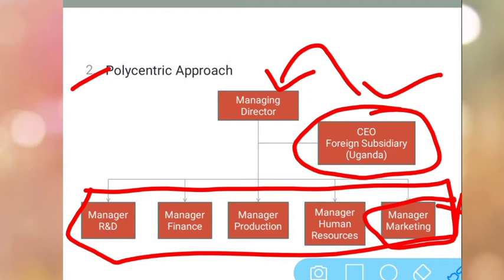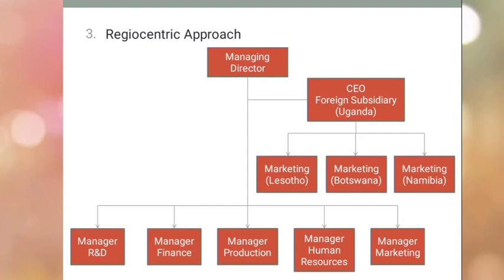In the polycentric approach, the company appoints a Chief Executive Officer for the foreign subsidiary branch. The CEO of the foreign subsidiary directly reports to the managing director at the home country head office. The CEO independently takes all decisions regarding marketing activities, production, product design, marketing strategies, and appointment of human resources, based on the requirements and preferences of the local people in the foreign market. The strategies in the foreign market are altogether different from those in the domestic market. The polycentric approach is generally used by companies in multinational company stage, stage three.